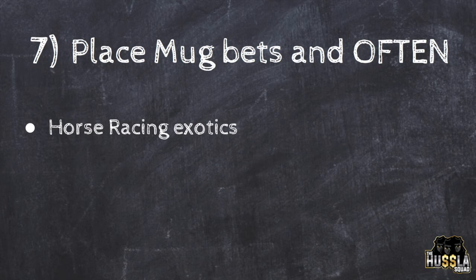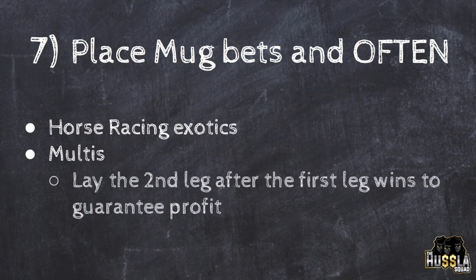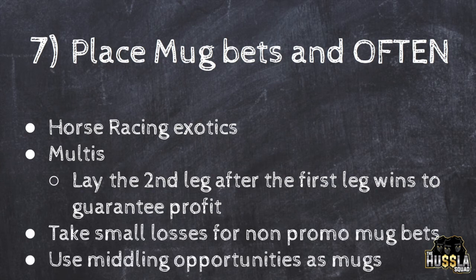Mug bets make your accounts look genuine because regular punters place stupid bets and multis going for big payouts. If you put a two or three leg horse multi on for $10 or $15 and it gets through the first or second leg, you can actually lay the third leg and win a small amount, or hedge to make a profit. You can also use your middling opportunities as mug bets — when you learn middling in module two, you'll see these are great for account sustainability and count as mug bets since you're usually placing them right before a match starts.